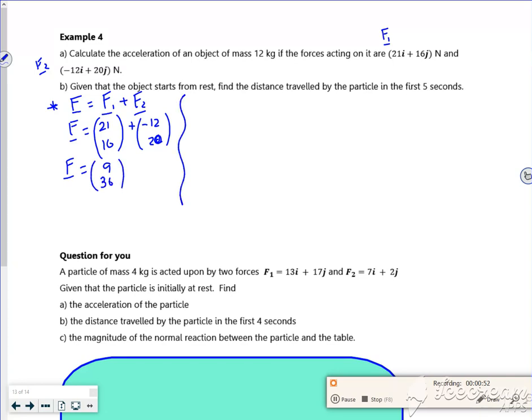I'm going to use F equals ma, because that's what I want to work out, the acceleration. So my force, my resultant force is 9, 36. My mass is 12 and my acceleration is a. So 12 times the acceleration is 9, 36. If I divide through by 12, I've got 9 divided by 12 is 3 quarters, and 36 divided by 12 is 3. So that's my acceleration as a vector.